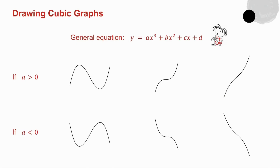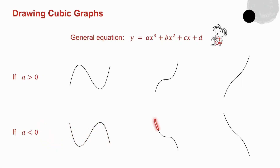If a is negative it has a general downward direction. It could have two turning points, a stationary point, or neither.